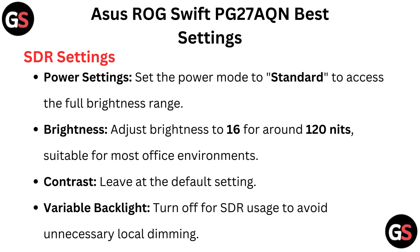SDR settings. Power settings: set the power mode to standard to access the full brightness range. Brightness: adjust brightness to 16 for around 120 nits, suitable for most office environments.